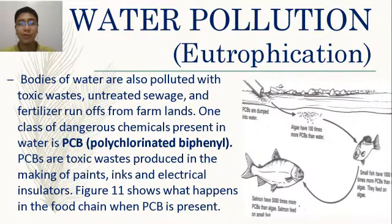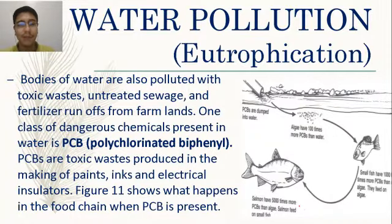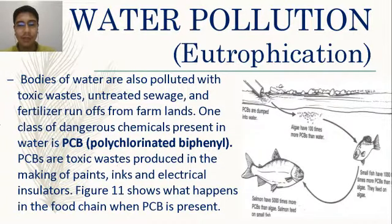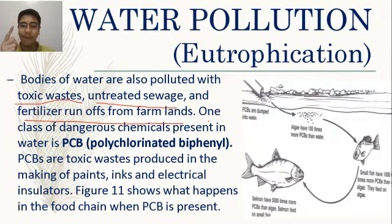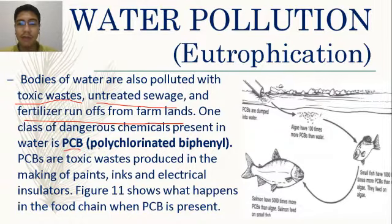Bodies of water are also polluted with toxic waste — evident in polluted rivers like the Pasig and Marikina. Sources include untreated sewage and fertilizer runoffs from farmlands. One class of dangerous chemicals present in water is PCB — polychlorinated biphenyl — toxic waste produced in the making of paints, inks, and electrical insulators.